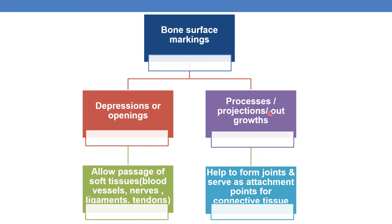Coming to processes, projections, or outgrowths — they help to form joints and serve as attachment points for connective tissue.